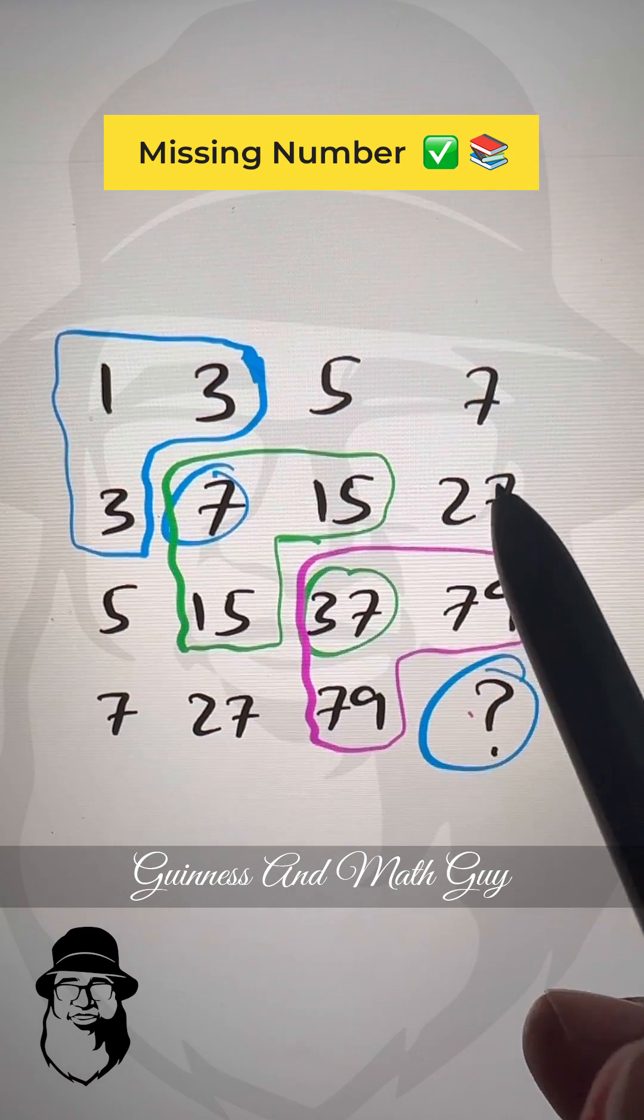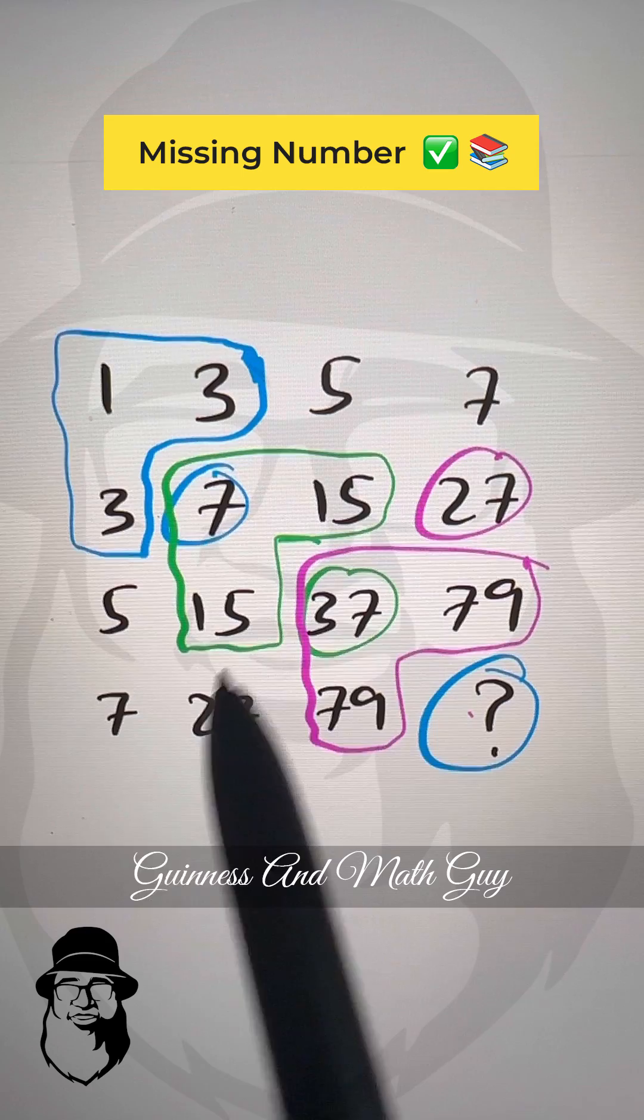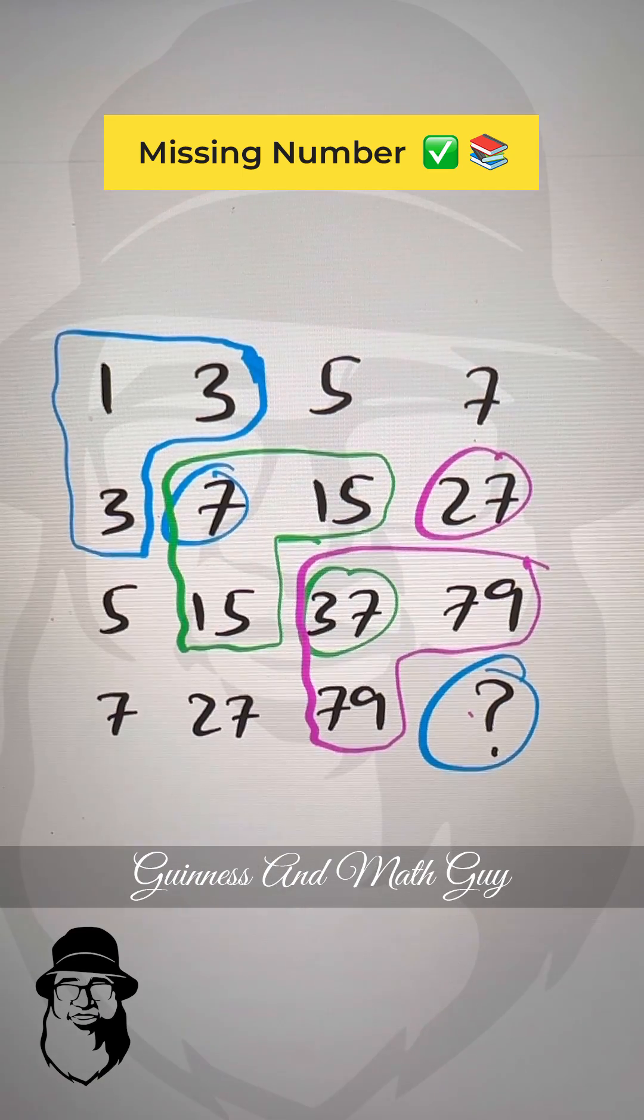You can check other numbers. This 27 is sum of 7, 5 and 15. This 15 is sum of 7, 5 and 3 and so on.